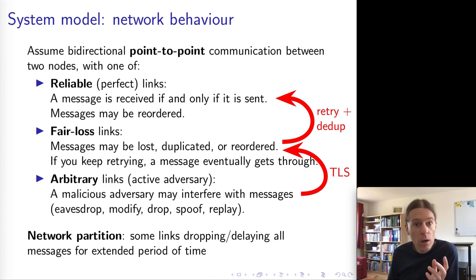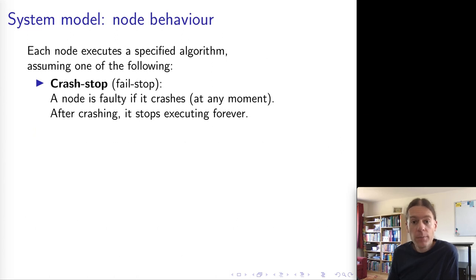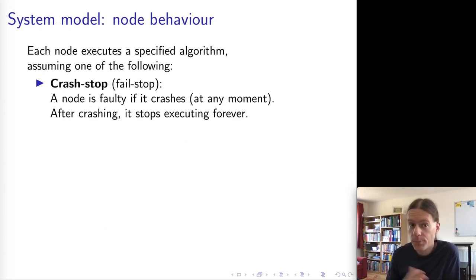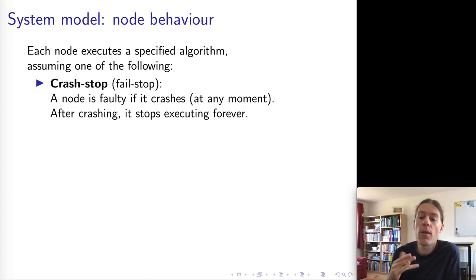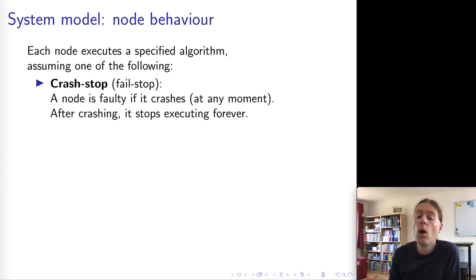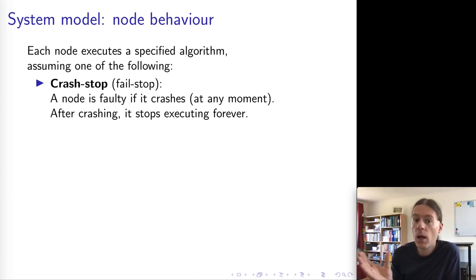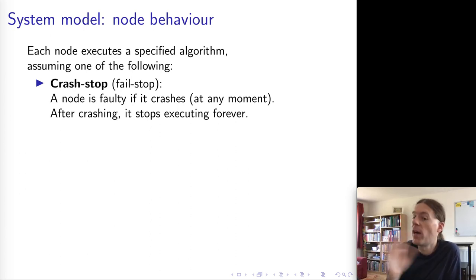So that's our model of network behavior. The next part of the system model is how nodes behave. Nodes might fail in various ways. The first type of fault to consider is a crash fault. In the crash stop abstraction, we assume that a process might crash at any moment, and once it has crashed it will never come back again — it's dead forever.